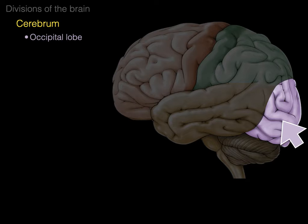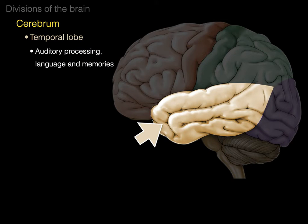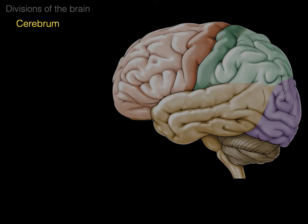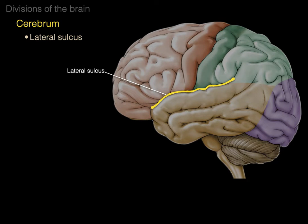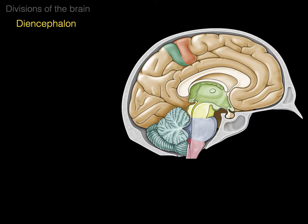There is the occipital lobe, deep to the occipital bone — that's the primary visual cortex, where input from your retina ultimately goes to help you know what you're looking at. On the lateral surface, deep to the temporal bone, is the temporal lobe, where auditory processing, language processing, and memory formation and storage occur. There is the lateral sulcus — the big valley between our frontal and parietal lobes and the temporal lobe. The deep floor of the lateral sulcus is the insula lobe, not shown in any of the diagrams.